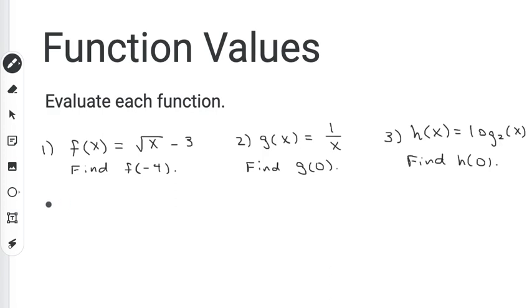So for this one, I get f(-4), f(-4) is equal to the square root... Now I have x right here, and I need to replace x with a negative 4. So I'm taking the square root of negative 4, and then I'm subtracting 3 at the end. So I'm going to bring down the minus 3.